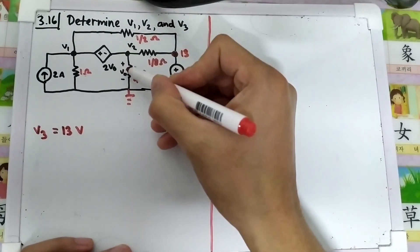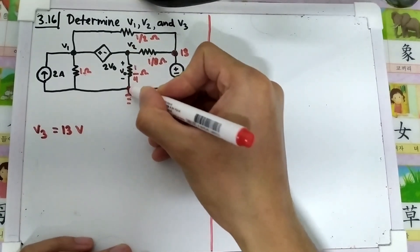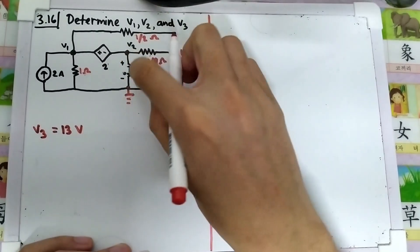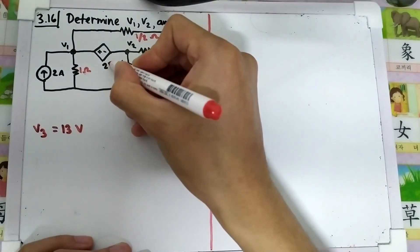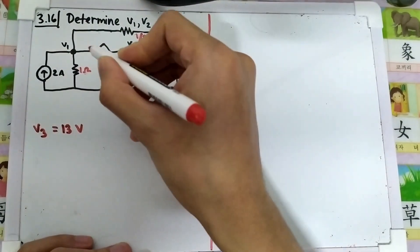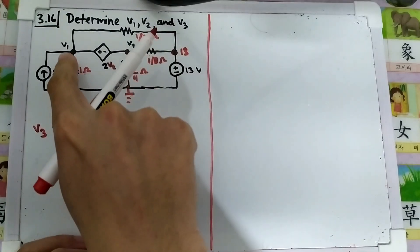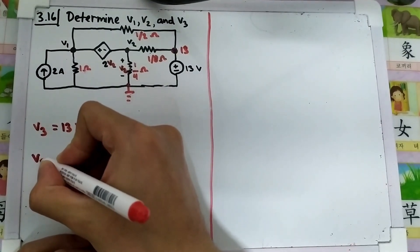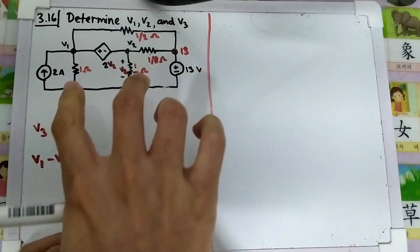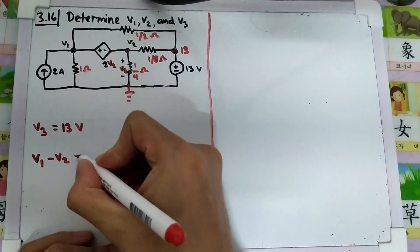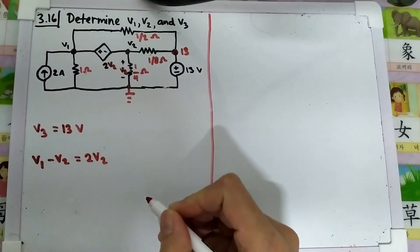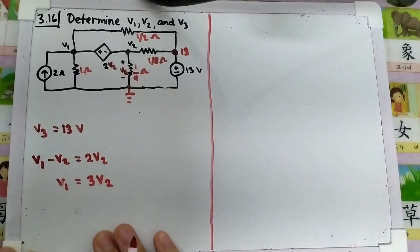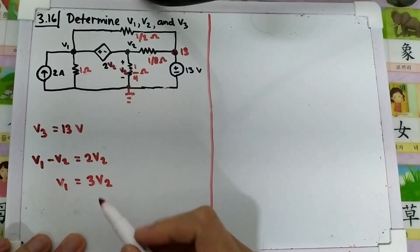V0 is the voltage between the ground and this node, which equals V2. So we can replace V0 with V2 throughout. Now looking at V1 and V2, we know the difference: V1 minus V2 equals 2V2 from the dependent source. Therefore V1 equals 3V2. We'll save this as equation number one.